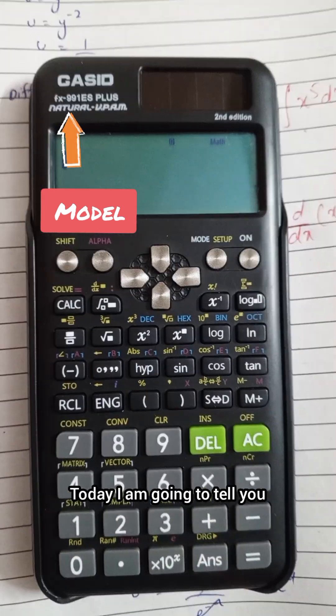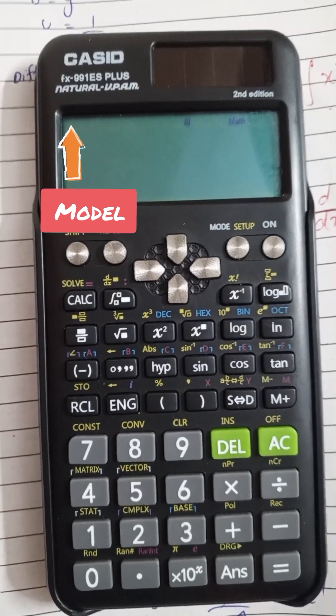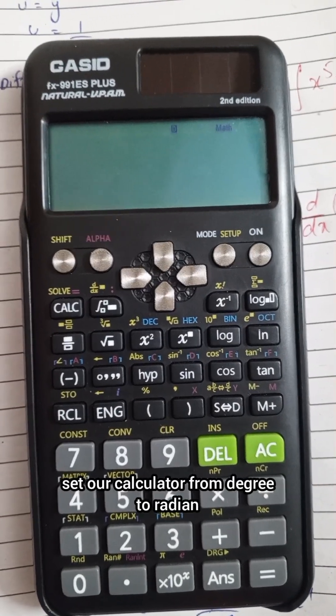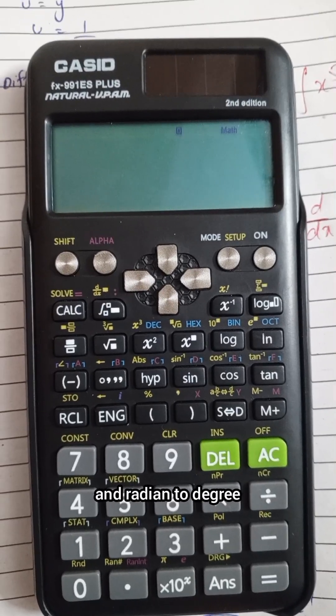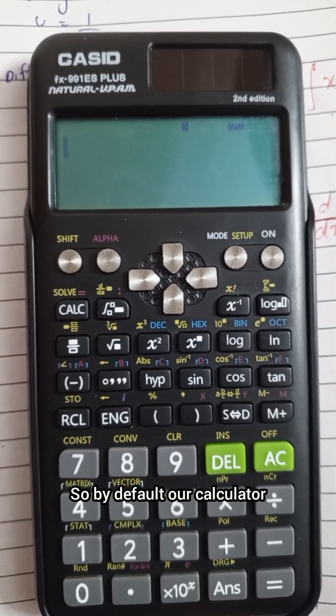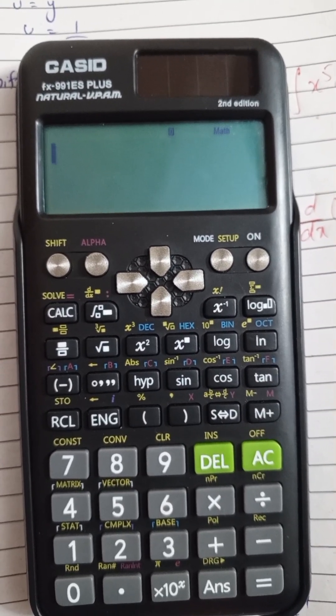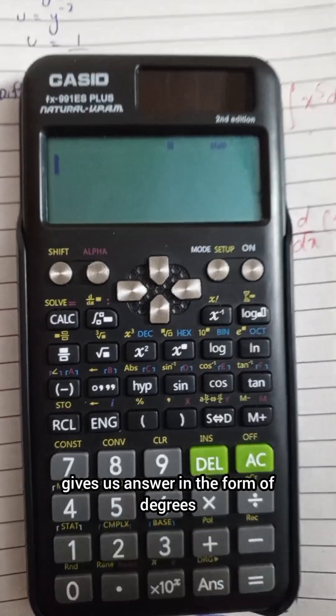Assalamu alaikum students. Today I'm going to tell you how we can set our calculator from degree to radian and radian to degree. By default, our calculator gives us answers in the form of degrees. For example,